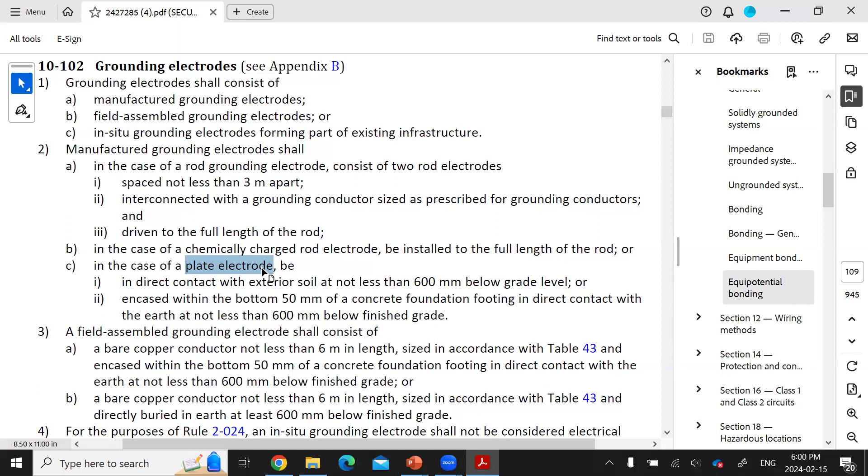Sub-rule 3 talks about a field-assembled grounding electrode that you might make out of some material that you have on hand. If you make a field-assembled grounding electrode, you will probably use bare copper conductor that is encased in a concrete footing in direct contact with the earth. The bare conductor has to be sized in accordance with Table 43 and it can be no less than 6 meters in length and has to be buried at least 600 millimeters below the surface.